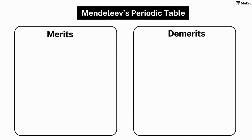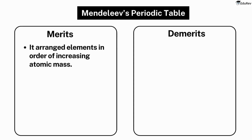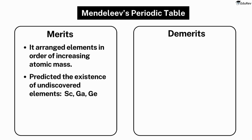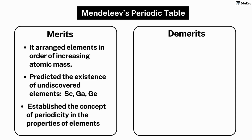Let us quickly summarize the merits, demerits, and conclusion of Mendeleev's periodic table. Firstly, it arranged the elements in order of increasing atomic mass, which helped identify the periodic trends in the properties of elements. Secondly, it predicted the existence of undiscovered elements and their properties, a success demonstrated by the discovery of gallium, germanium, and scandium. Lastly, the periodic table established the concept of periodicity in the properties of elements.